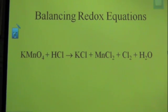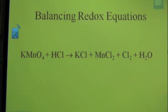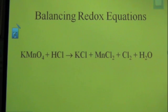In this lesson we're going to learn how to balance the following equation using the oxidation number method relative to this redox reaction. To be able to balance this using the oxidation number method we have to assign oxidation numbers. We're going to take each element within the compounds on the reactant side and assign oxidation numbers.